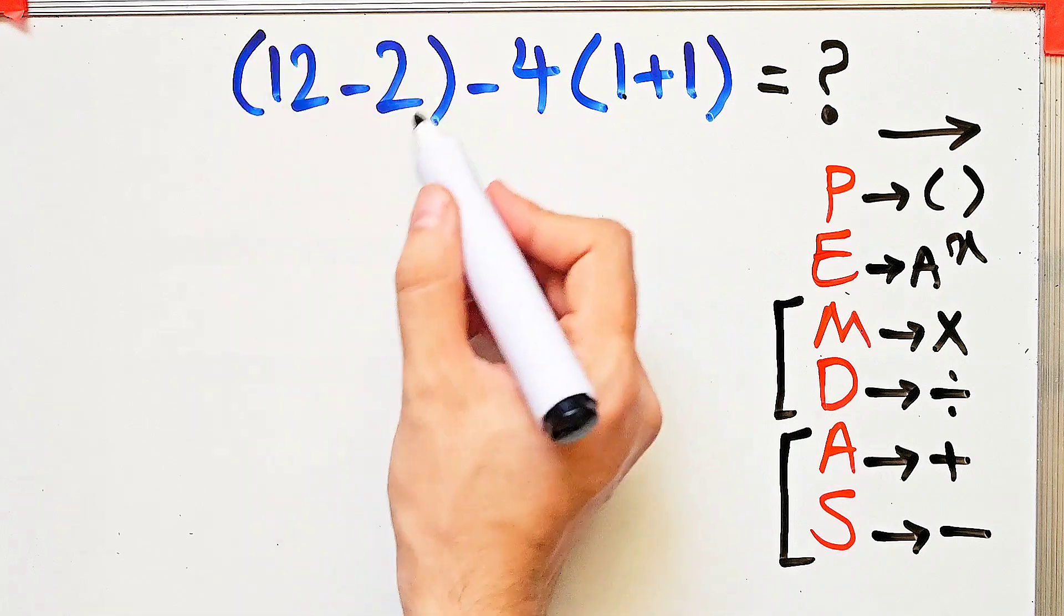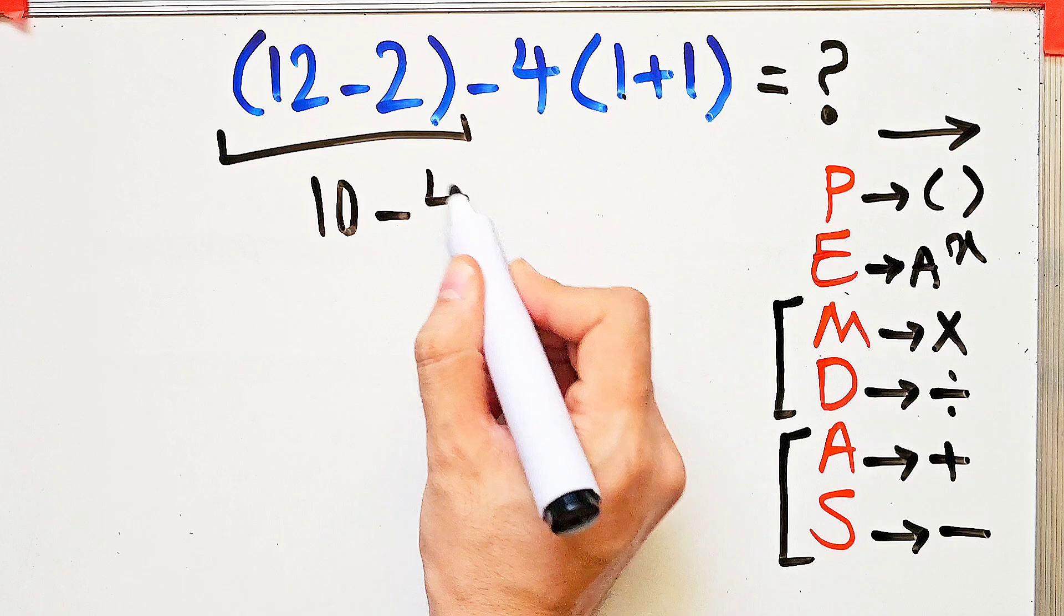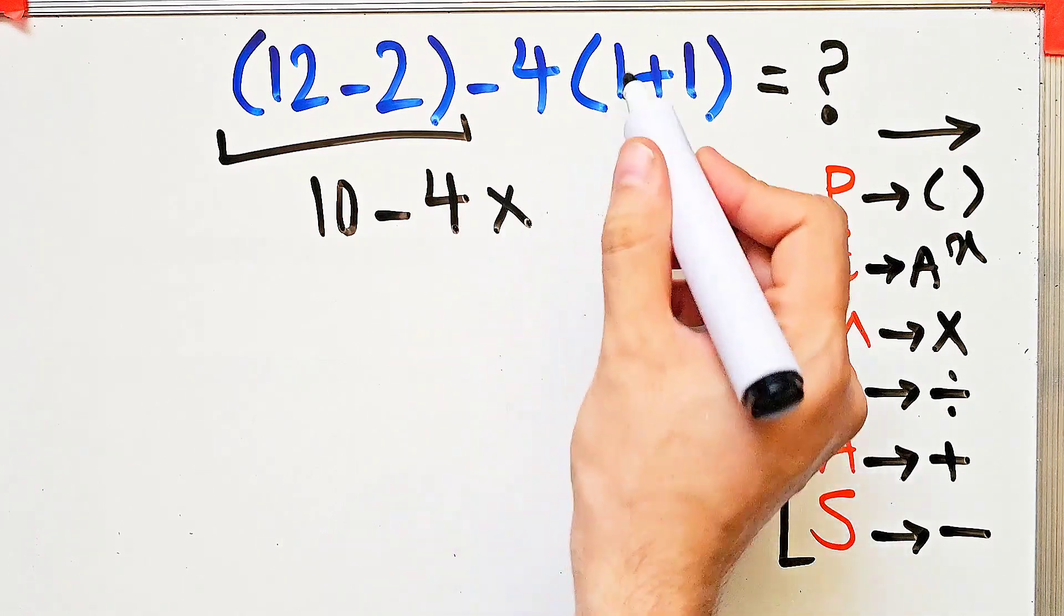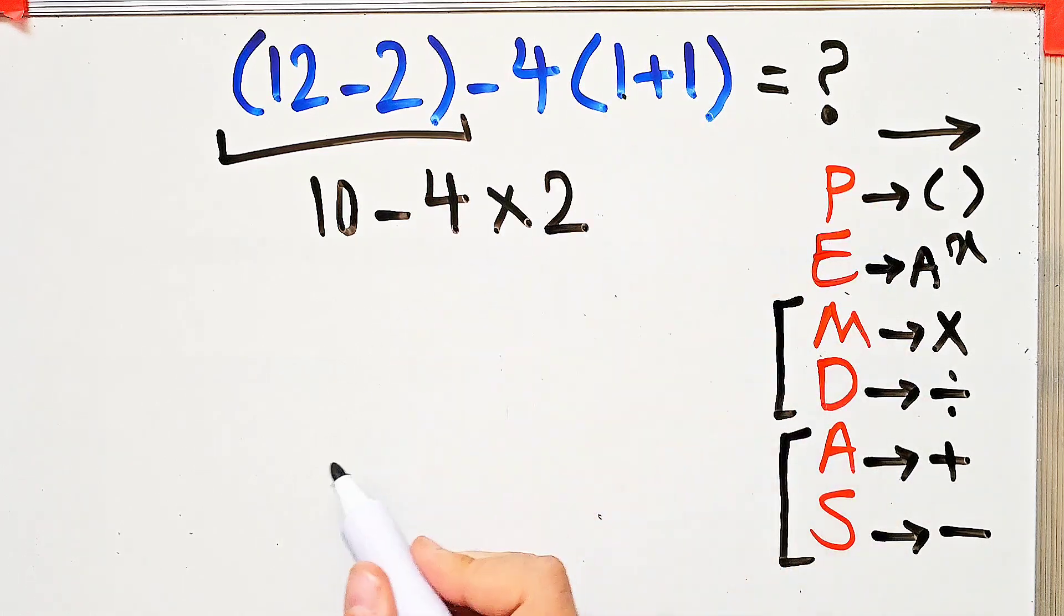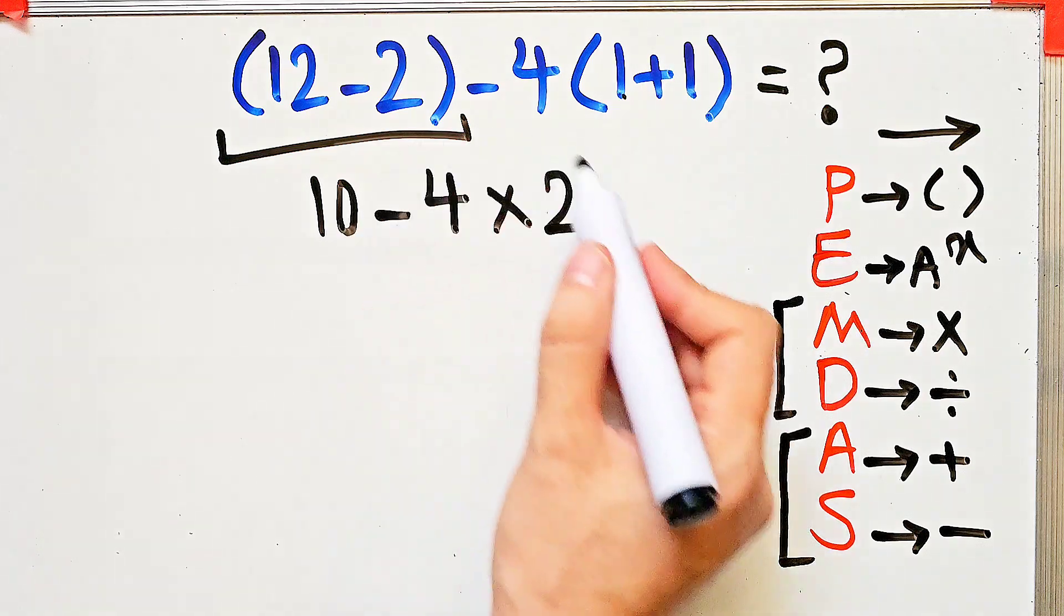According to the PEMDAS rule, first we simplify these parentheses. We have 12 minus 2, which equals 10. 10 minus 4, then times 1 plus 1, which equals 2. Now we have subtraction and multiplication. First we do this multiplication because the multiplication has higher priority than subtraction.